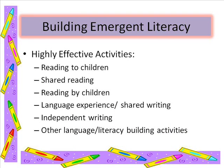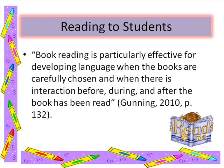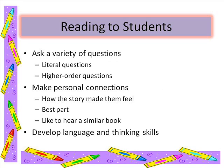So what are some highly effective activities that will help build emergent literacy? Some of the activities include reading to children, shared reading, reading by children, language experience and shared writing, independent writing, and other language building activities. Book reading is particularly effective for developing language when the books are carefully chosen and when there is interaction before, during, and after the book has been read. When reading to your students, ask a variety of questions including both lower and higher order questions. Help students make personal connections with the story by asking how the story made them feel or what they liked best. Also develop language and thinking skills. How much students gain from being read to depends on the quality of the book and the way it is read. Students show greater gains when the reading is interactive and they are asked questions or involved in discussing the story.